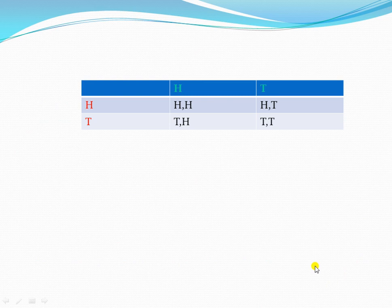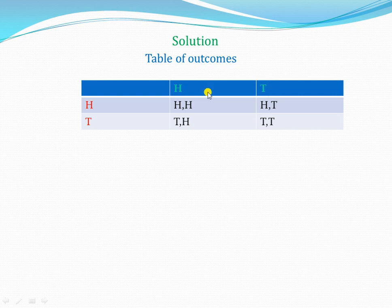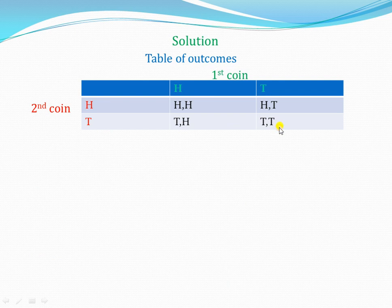Now let's look at the solution. In this table, the first coin has a head and a tail, and the second coin also has a head and a tail. When we pair them up: head with head gives head-head; head with tail gives head-tail; tail with head gives tail-head; and tail with tail gives tail-tail. Our sample space is therefore 4, because we have 4 events from both coins.